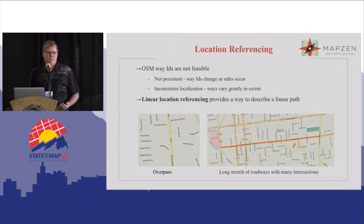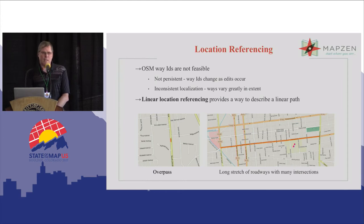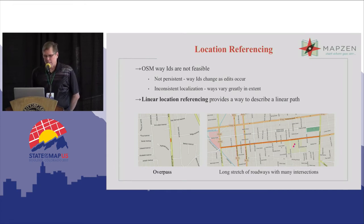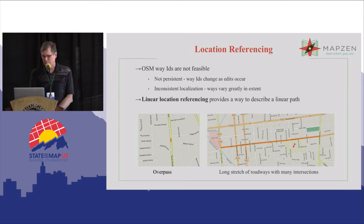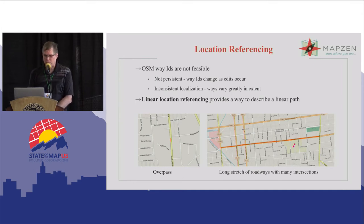The first question is, why doesn't someone just associate the data to OpenStreetMap way IDs? There are a couple of potential issues. First, OSM way IDs are not really persistent — they can change as edits occur, they can go away, new ones can be added. Secondly, they provide inconsistent localization. Many OpenStreetMap ways are very short — for example, an overpass that isn't a very significant feature still gets its own way ID. And when there are large stretches of roadway going through many intersections, it doesn't really localize data to one small portion of that way ID.